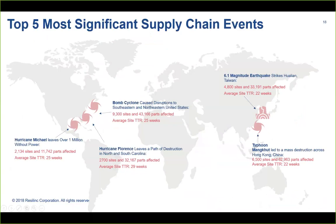We always provide the top five most significant supply chain events. In 2018 these were: Hurricane Michael, a bomb cyclone and snowstorm on the US East Coast, Hurricane Florence, a 6.1-magnitude earthquake that hit Taiwan in February — the most significant of several Taiwan earthquakes that year due to its location and depth — and Typhoon Mangkhut. For these five events, we received 54 supplier confirmations that they were affected, and they provided time to recovery to their customers through Resilink's supplier impact confirmation feature.